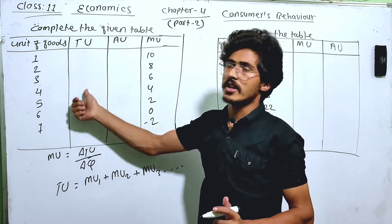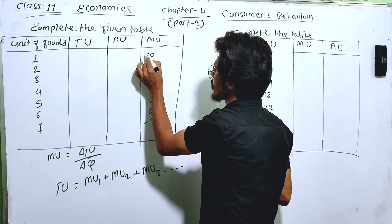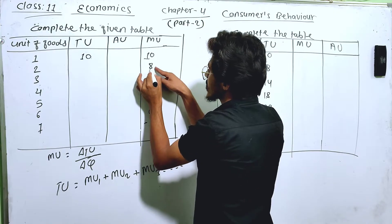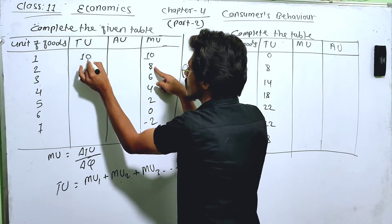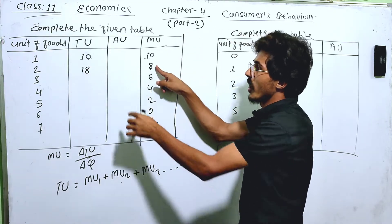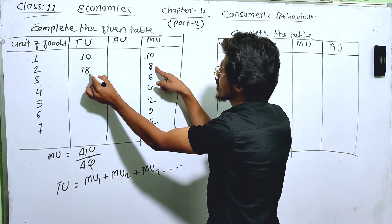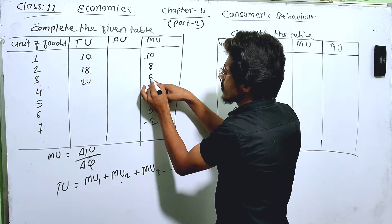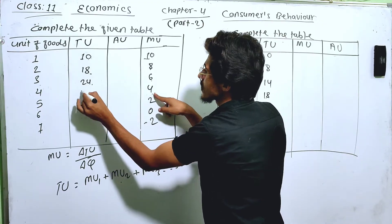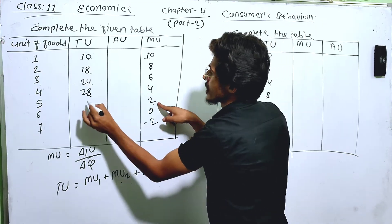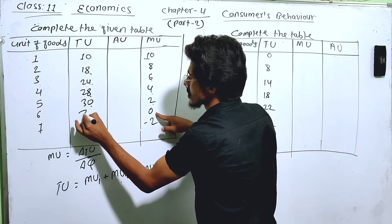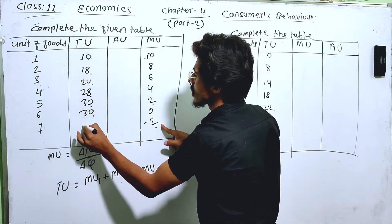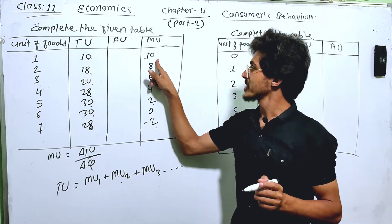The marginal utility is given. Total utility in the first, the marginal utility is the same. The total utility is the sum of the marginal utility. We have 18 for marginal utility. Then we have 24, the marginal utility is 28. Then the marginal utility is 30. Then zero to 30. Then 30 minus 2, which is 28. Here is how the total utility goes forward.